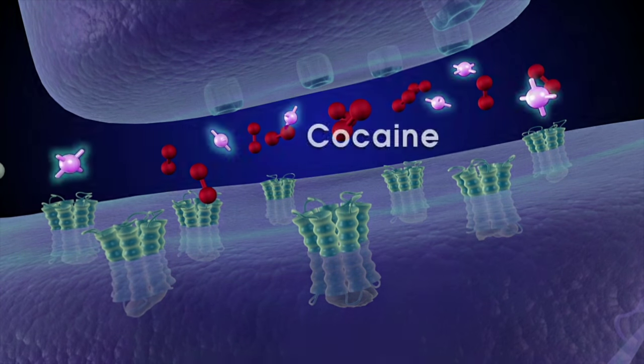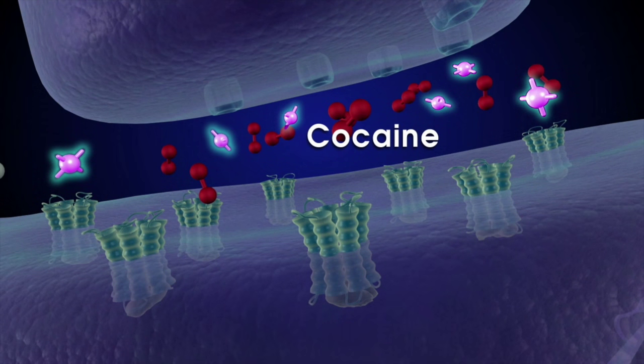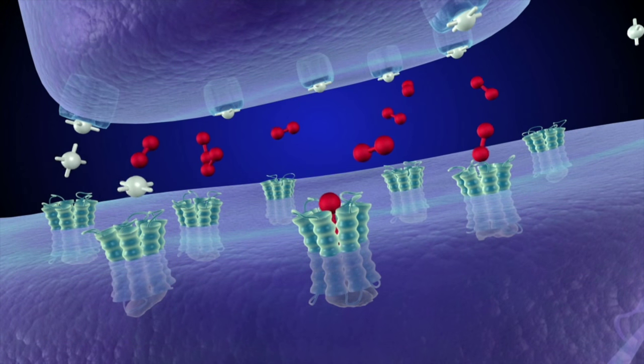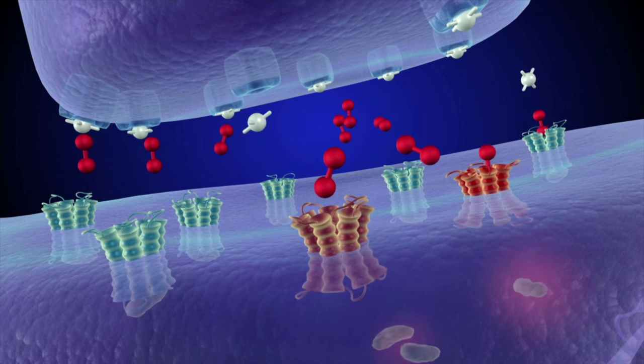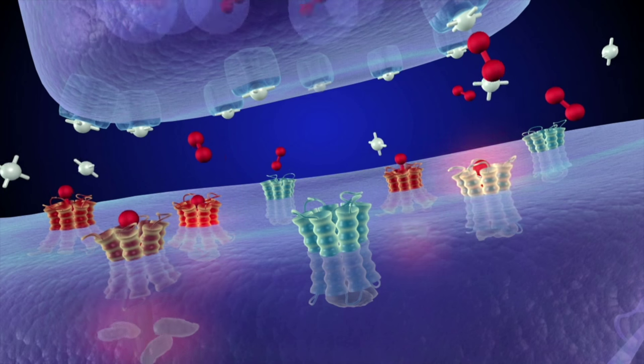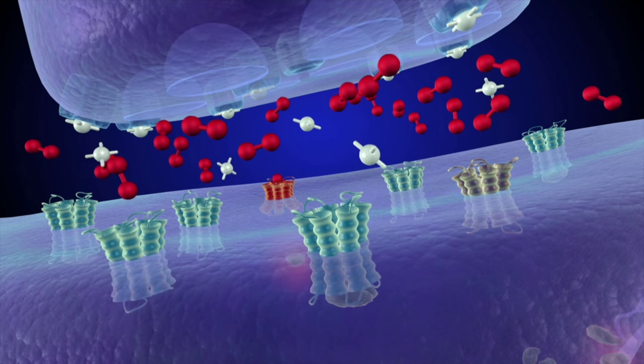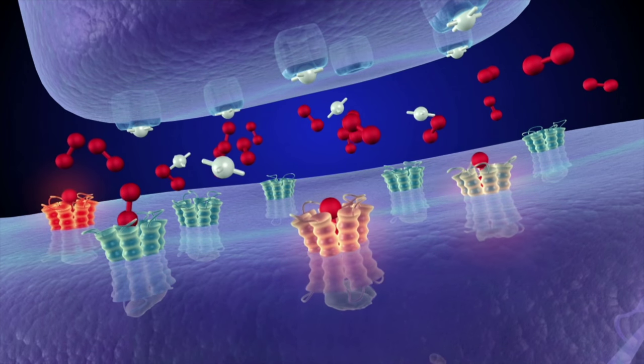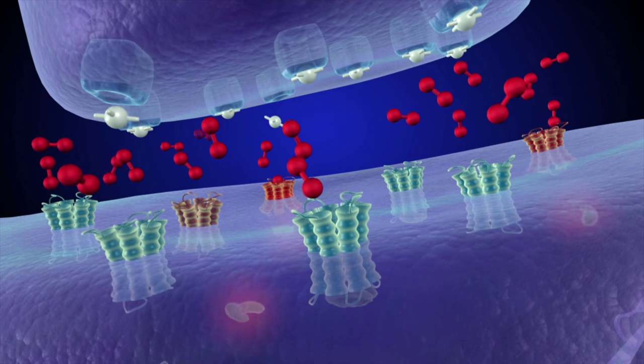When someone first uses cocaine, the drug quickly enters the brain, where it blocks the transporters on the presynaptic cell. Since dopamine cannot re-enter the presynaptic cell, it begins to accumulate in the synapse, where it can reach abnormally high levels and remain there much longer than usual.